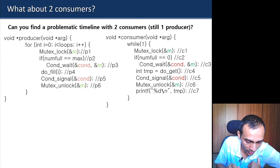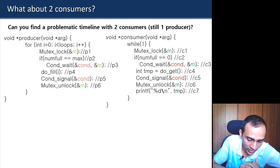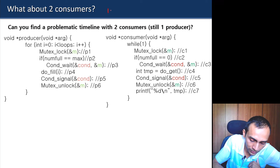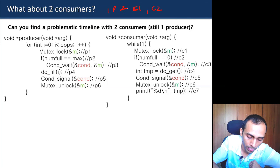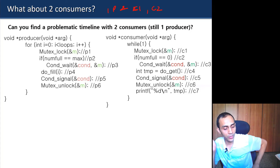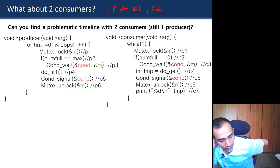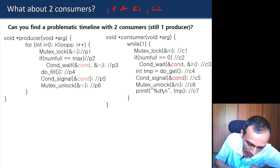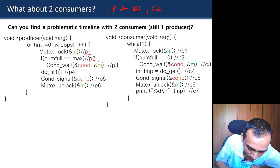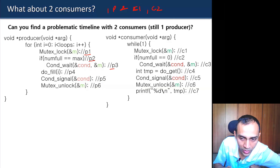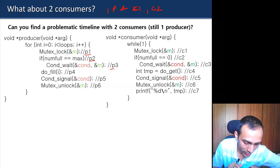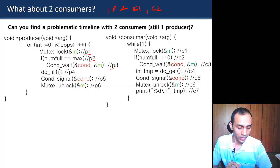This code works fine for a single producer and single consumer. However, it breaks if there are more than one consumer. With one producer and two consumers C1 and C2, there is a problematic execution timeline. The exercise is to trace the ordering of producer and consumer operations to find where the code fails with two consumers.